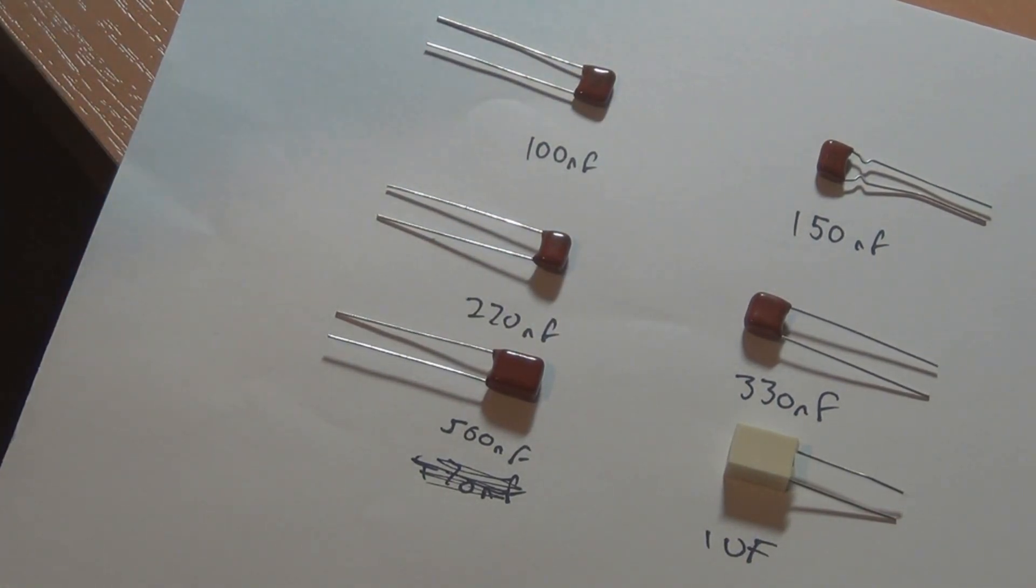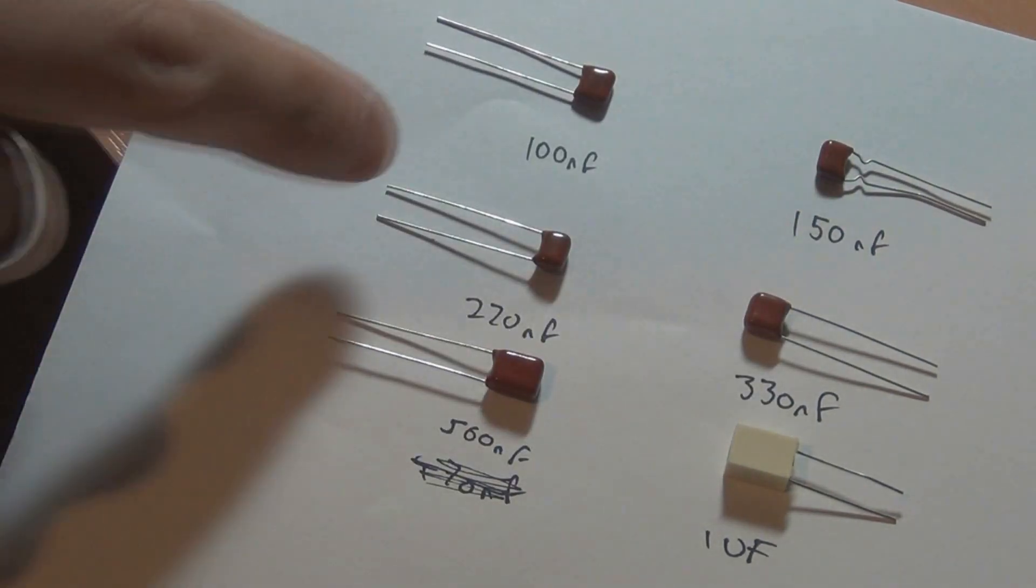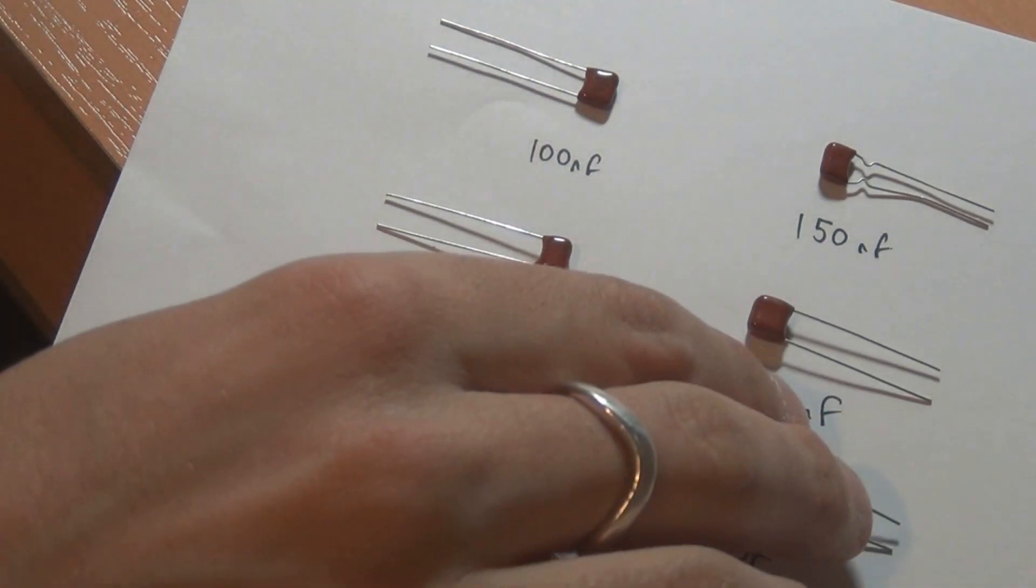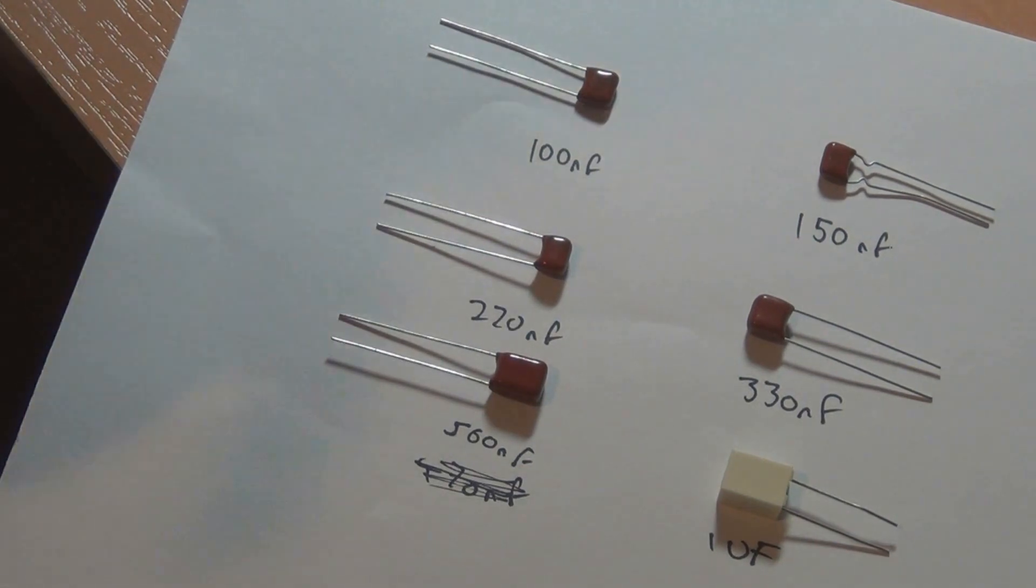So you can see there's a few differences in how the thickness and height ramps up as you go over 100 nanofarad. It didn't do it that much with EPCOS until we got up to 330 and 470. But with ECQ it starts at about 220. So you need to check the datasheet to make sure that your layout accommodates for these changes in sizes, and that if you're putting it into a tight space or a 1598 pedal or whatever, that you've accounted for the extra height that these one microfarad capacitors take up.